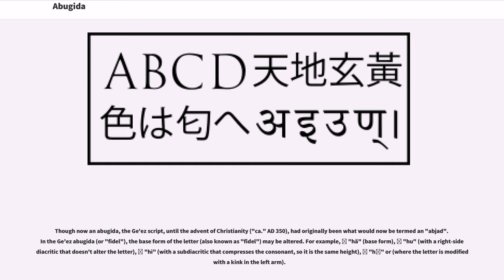The Ge'ez script, until the advent of Christianity around 350 CE, had originally been what would now be termed an abjad. In the Ge'ez abugida, or Fidel, the base form of the letter (also known as Fidel) may be altered. For example: Ha (base form), Hu (with right-side diacritic that doesn't alter the letter), Hi (with a sub-diacritic that compresses the consonant so it is the same height), and Hor (where the letter is modified with a kink in the left arm).